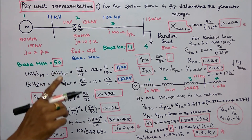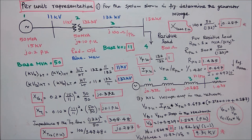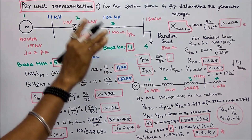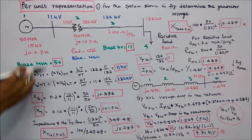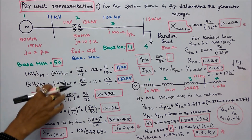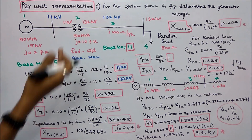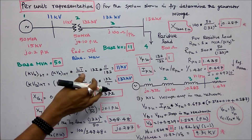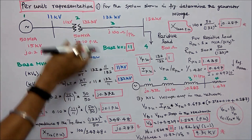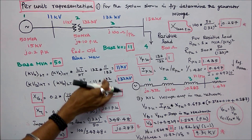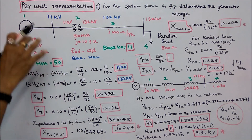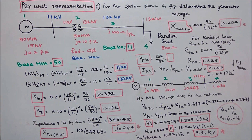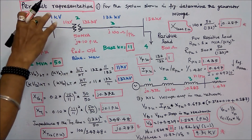Step 1: choose base MVA = 50, base KV = 11 (low voltage side). High voltage KV base = low voltage KV base × (HT rating / LT rating) = 11 × (132/11) = 132 kV. Given values are in red, chosen values in green, and new base KV values in blue.